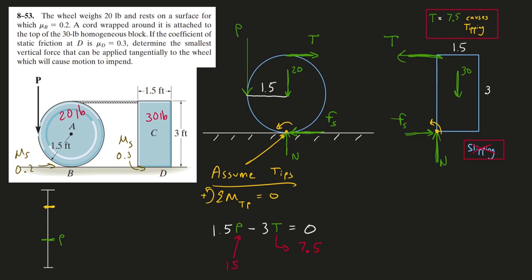We'll do that math and what I get is 15. So 15 will cause both to tip. But what if at some point here I find that the wheel slips?